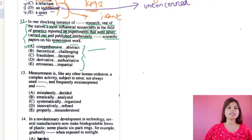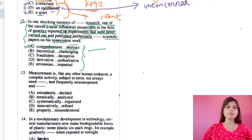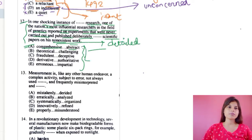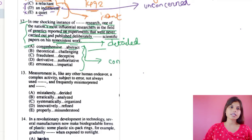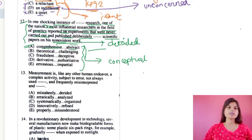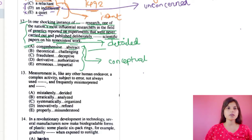Checking option A: 'comprehensive' means in detail, in a detailed manner. If we put 'comprehensive research' and 'abstract scientific papers' — abstract means conceptual or theoretical — this doesn't make proper sense for the context of fraudulent publishing, so we strike it out. Option B is 'theoretical and challenging.' Theoretical means in details, in theory, and challenging means something that provides a challenge. 'Challenging scientific papers on his non-existing work' doesn't make meaningful sense here, so we strike that out too.